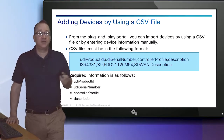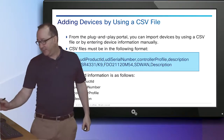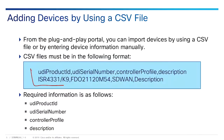We're going to import devices using a CSV file, and here's the format. The UDI product ID — you may have seen this before — is basically the UDI. Cisco's been using this for licensing purposes for the past 10 years or so. Then we have a serial number, what our controller profile is, and just some description so we know what site it is. So let's say this serial number is going to San Jose — we put that in and label it so we know it's San Jose.